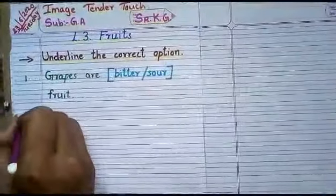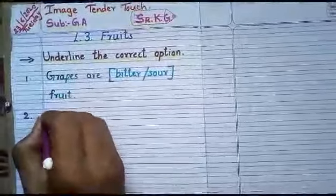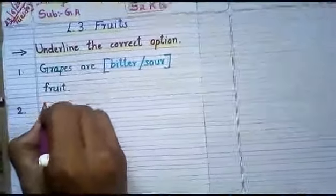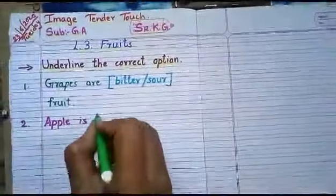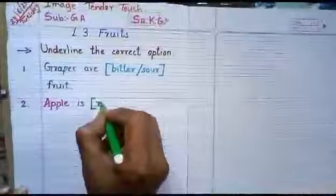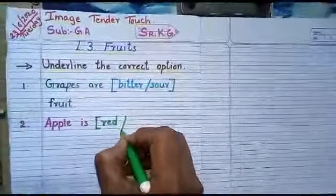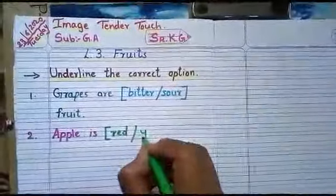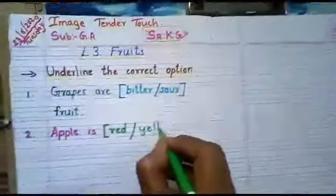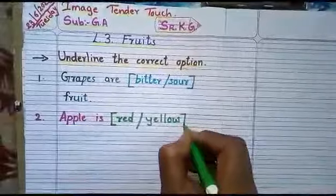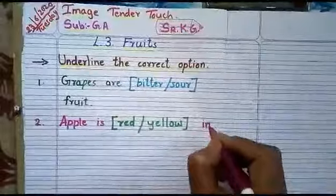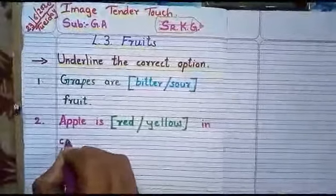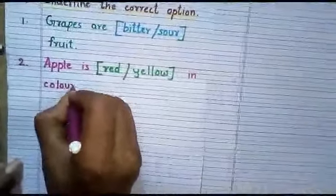Number 2. Apple. A-double-P-L-E. Apple is bracket red, R-E-D, or yellow, Y-E-L-L-O-W, in color. C-O-L-O-U-R. Color.